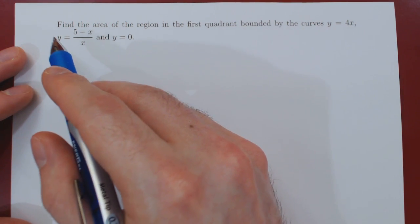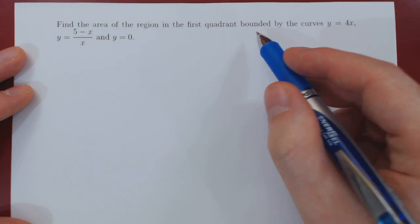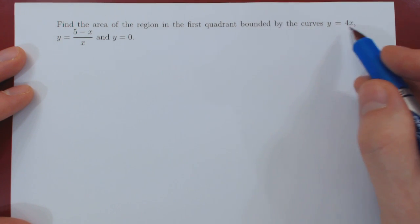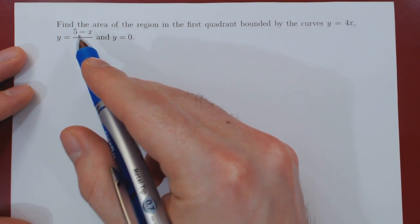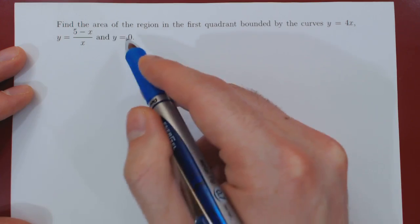Okay, so in this video we want to find the area of the region in the first quadrant of the xy plane bounded by the curves y equals 4x, y equals 5 minus x over x, and y equals 0, the x-axis.